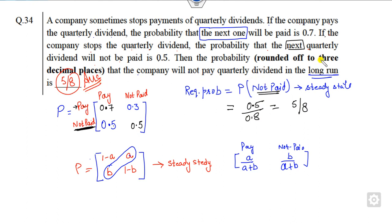You can convert them up to three decimal places. Then the right answer is 5 divided by 8. So this is the way you can apply this steady state whenever there is a 2x2 matrix. Look about the diagonal entries A and B.